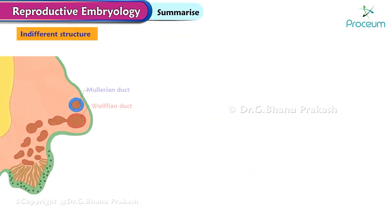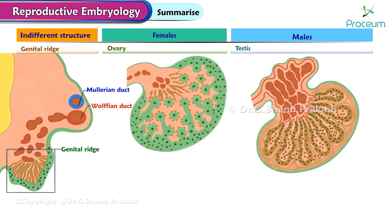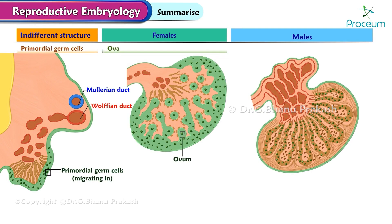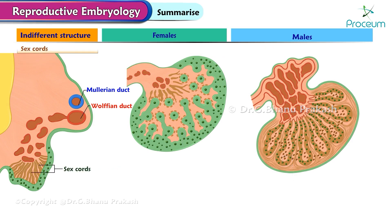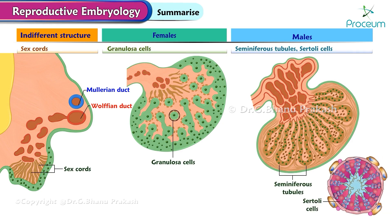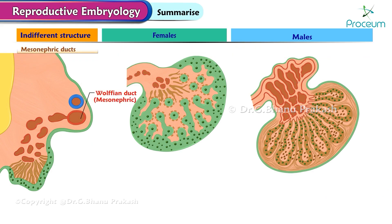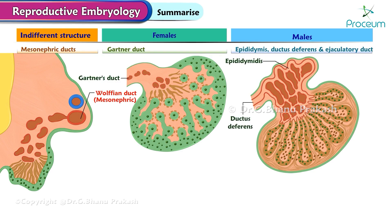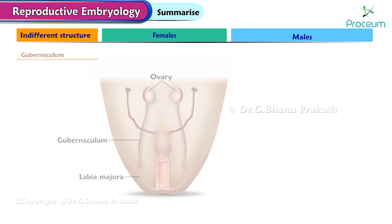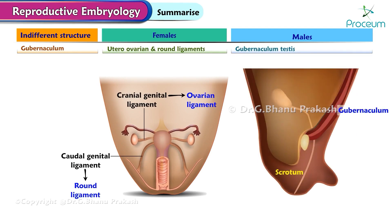To summarize: the indifferent ridge refers to the undifferentiated structure - the ovary in females and the testis in males. Primordial germ cells develop into ova in females and spermatozoa in males. Sex cords consist of granulosa cells in females and seminiferous tubules with Sertoli cells in males. Mesonephric tubules form the epoophoron and paroophoron in females, and contribute to the development of the efferent ductules and paradidymis in males. Mesonephric ducts form Gartner's ducts in females and contribute to development of the epididymis, ductus deferens, and ejaculatory duct in males. The gubernaculum is associated with the utero-ovarian and round ligaments in females, and the gubernaculum testis in males.